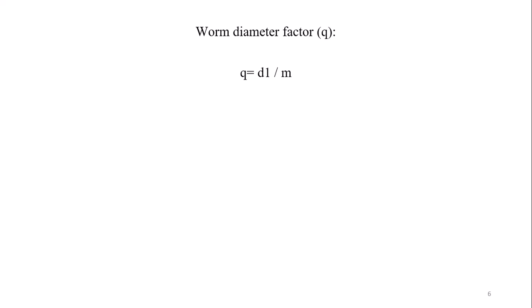Worm diameter factor q equals d1 divided by m. Recently we calculated d1 and m, so we have q equals 16. Gamma equals Z1 divided by q. We need to calculate gamma here - this will also be considered as the lead angle for the worm.